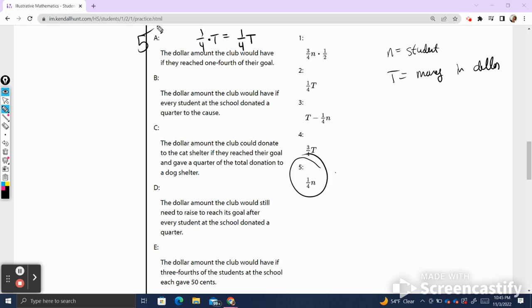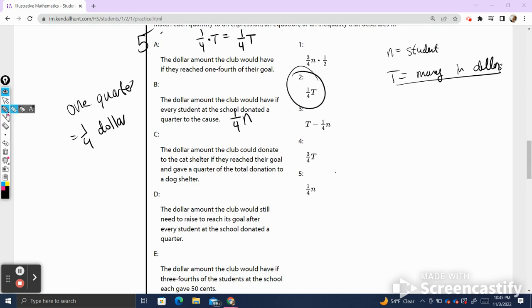B says the dollar amount the club would have if every student at the school donated a quarter to the cause. I remember that one quarter is equal to one fourth of a dollar. The reason I have to do that is because, remember, our T is measured in dollars. So if every student had donated one quarter, they would all be donating one fourth of a dollar multiplied by the number of students that there is. That matches. I notice here that I made a mistake and that five doesn't match. It's not one fourth N. Five matches with one fourth T. Two matches with one fourth of N. We all make mistakes and it's important to see that you have to go back and fix your mistakes when you see it. That was just an error in me reading the answer choices. So one fourth N, that one matches with five. I'm circling these so I know which answers I've already used.